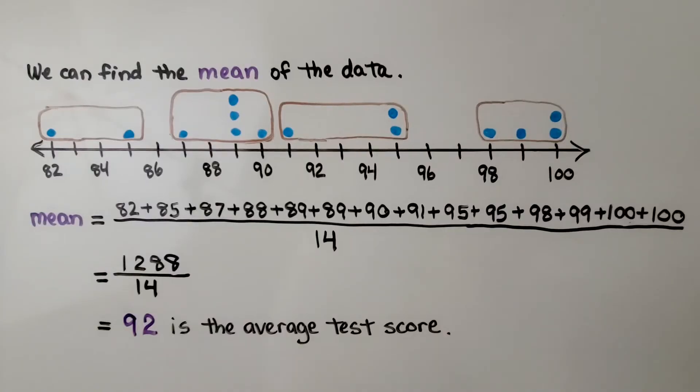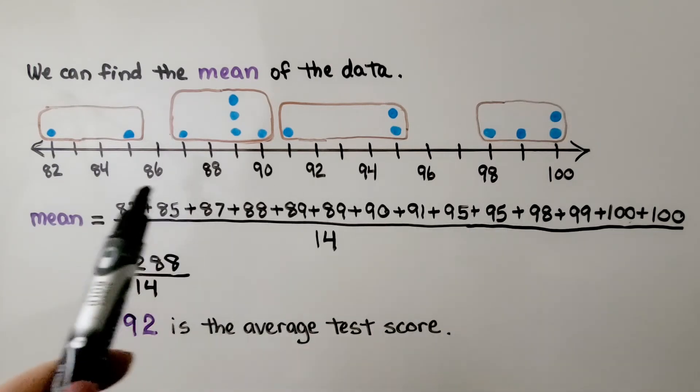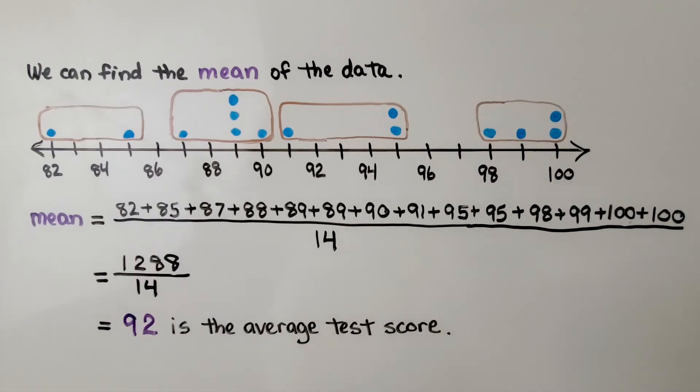We can find the mean of the data. The mean is the sum of the data values divided by the number of data values. We add up all the scores. We get 1,288. There's 14 scores, so we divide it by 14. We get 92 for the mean. 92 is the average test score.